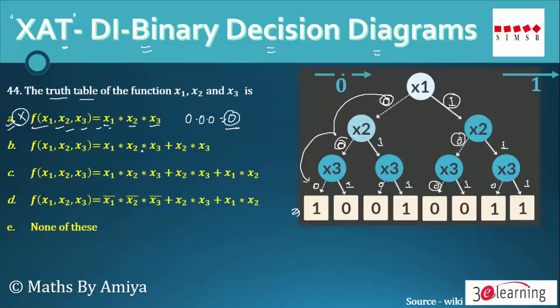Now we have to check x1 into x2 into x3 plus x2 into x3. If we have 0, 0, 0, that means 0 into 0 into 0 plus 0 into 0, our outcome should be 0, but here we have 1, so we can say even B is not the answer.